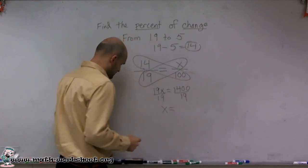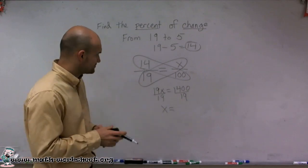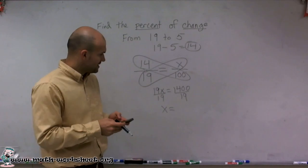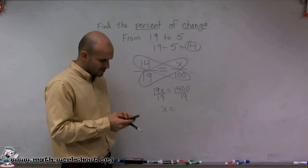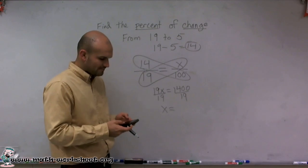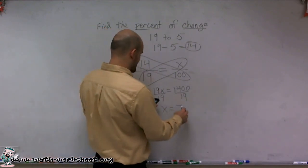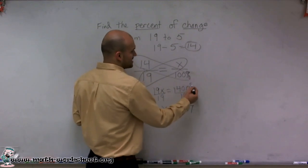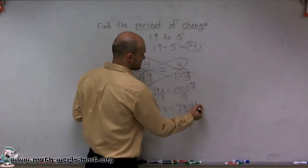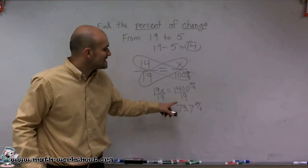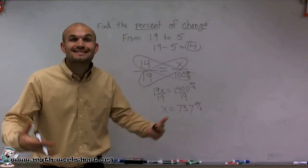And therefore, I'm going to get x equals, and let's see here. Use my lovely calculator. 1,400 divided by 19, which is 73.7. And again, we could increase this as a percent. So therefore, from 19 to 5 is a 73.7% decrease.